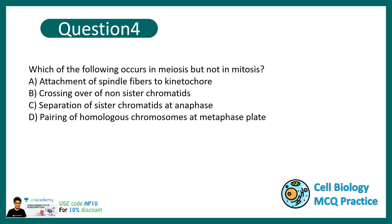Question number four: which of the following occurs in meiosis but not mitosis? This kind of comparison is always important. Options: attachment of spindle fiber to the kinetochore; crossing over of non-sister chromatids; separation of sister chromatids at anaphase; pairing of homologous chromosomes at the metaphase plate. The correct answer is crossing over of non-sister chromatids.